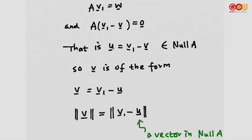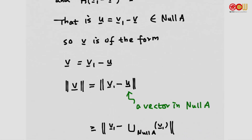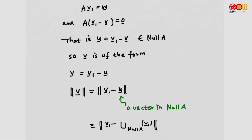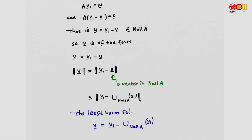The optimum u, where u is a vector in the null space of A and v1 is some given vector, would be the orthogonal projection of v1 onto the null space of A. So the least norm solution v can be obtained by starting from a solution v1 of Ax equals w and subtracting the orthogonal projection of v1 onto the null space of A.